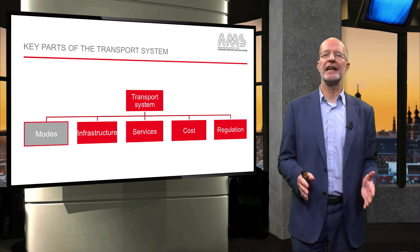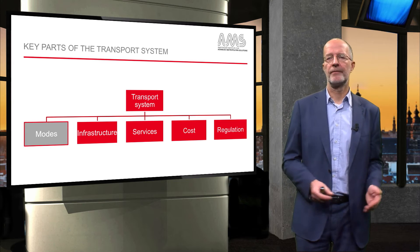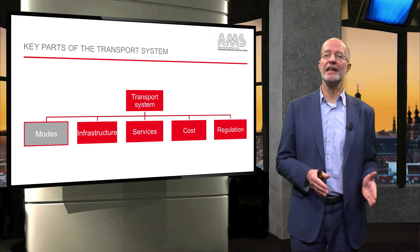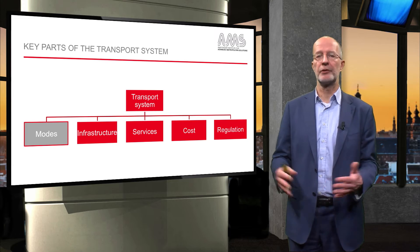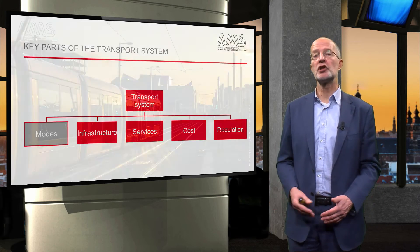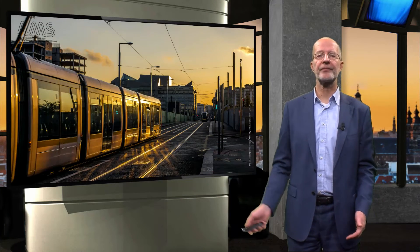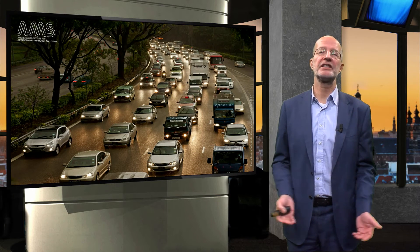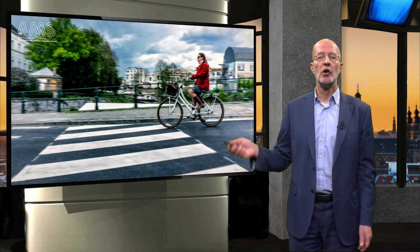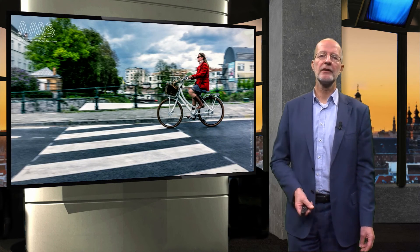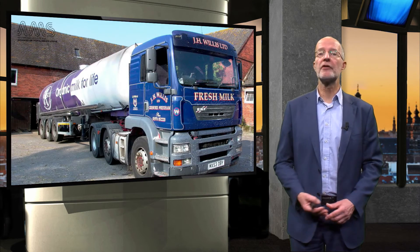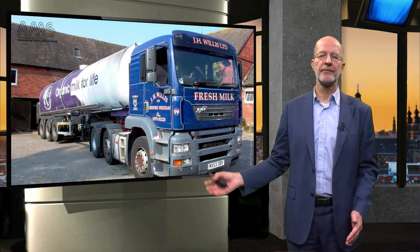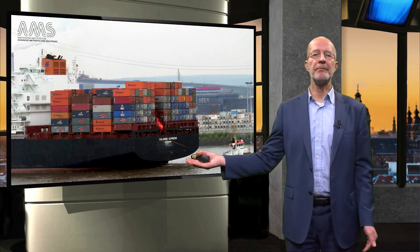Let's first explain modes. A mode of transport is the way in which people and freight are transported, such as the train, the car as a passenger or driver, or the bike. In the case of goods transport, examples include the lorry or a ship.